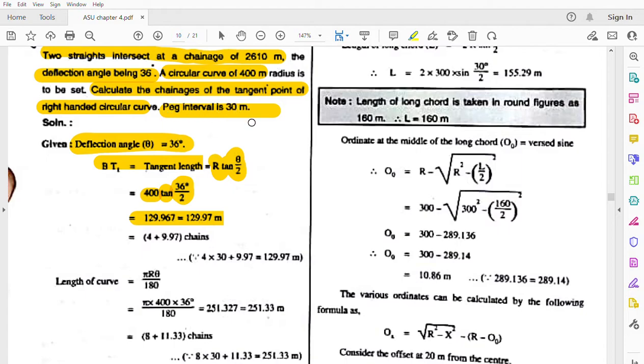This is in meters. Actually, we have peg interval given as 30 meters, meaning we will insert pegs at every 30 meter distance. The total distance we have to cover is 129.97 meters. So total how many pegs will we place? The number of pegs equals the number of chains.